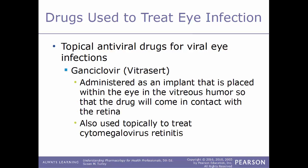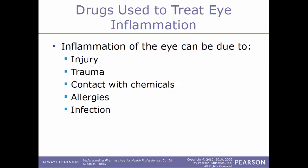The other type of antiviral drug is ganciclovir, sold under the trade name Vitrasert. This is administered as an implant placed within the eye, within the vitreous humor, so that the drug will come in contact with the retina directly. This can also be used to topically treat cytomegalovirus retinitis.